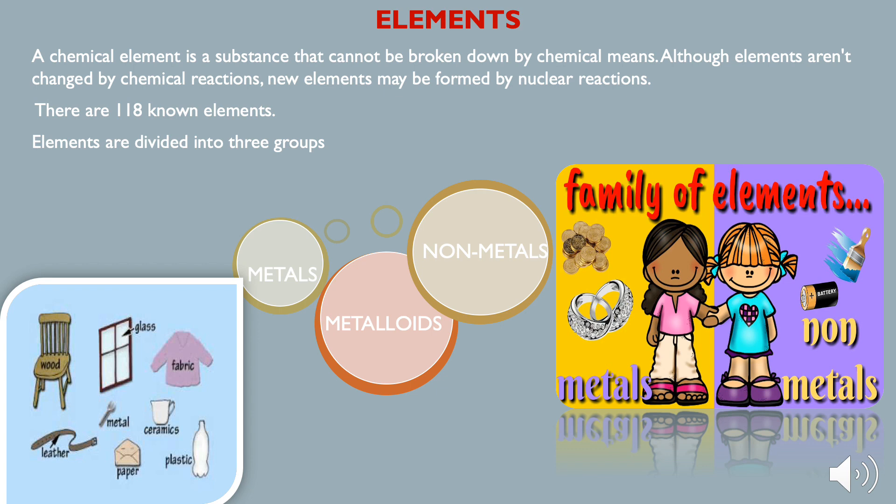Materials which cannot be broken down into simpler substances and which are composed of similar molecules are called elements. The smallest unit of an element is called an atom. There are 118 known elements, out of which 94 occur naturally on this earth.